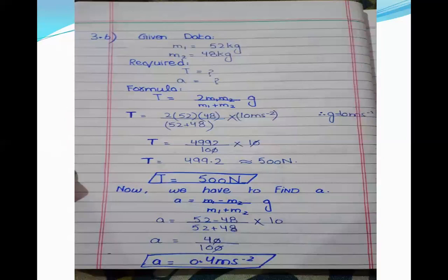The next numerical is 3.6. The statement is: two masses, 52 kg and 48 kg — m1 equals 52 kg and m2 equals 48 kg — are attached to the ends of a string that passes over a frictionless pulley. Both masses are moving vertically.